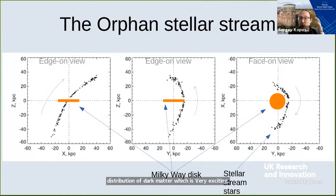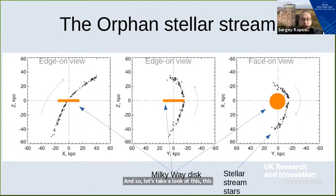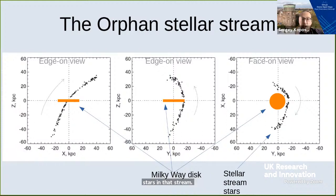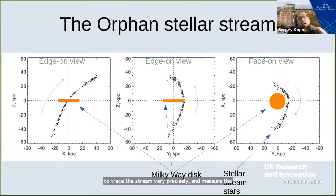There are also some additional special cases that make streams quite exciting. This is work we recently did on the so-called orphan stellar stream. What I show is the black points are individual stars in that stream — two edge-on views and one face-on view of that stream, with the orange showing the Milky Way disk. We managed to trace the stream very precisely and measure the motion of stars in that particular stream.